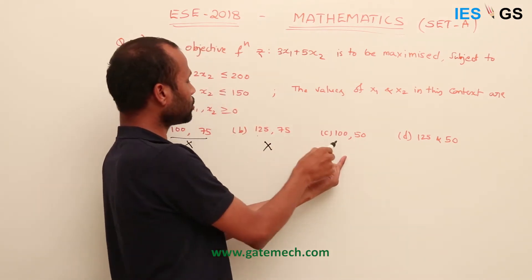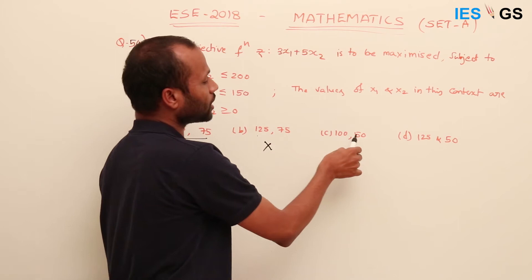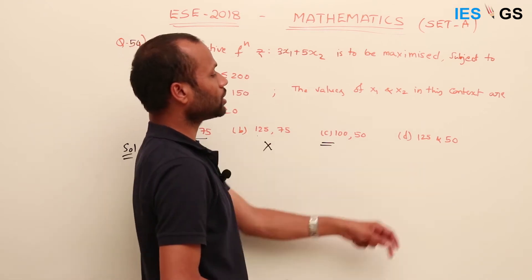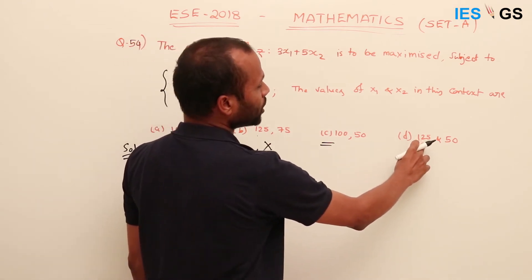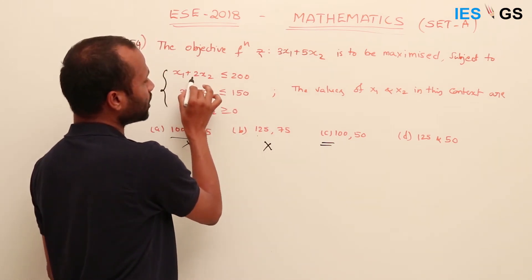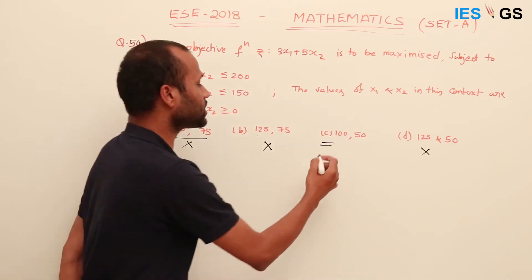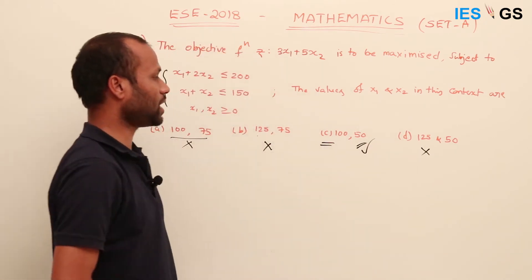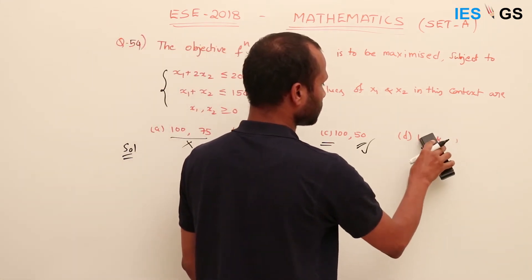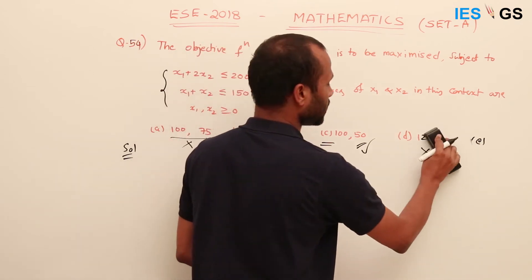Checking option C: x₁ = 100, x₂ = 50. First constraint: 100 + 2×50 = 200 ≤ 200 ✓. Second constraint: 100 + 50 = 150 ≤ 150 ✓. Third condition: x₁, x₂ ≥ 0 — both are satisfied ✓. This option satisfies all conditions. Option (125, 50): 125 + 2×50 = 225, which violates the first constraint, so it cannot be an answer. Therefore, the only valid option is C.